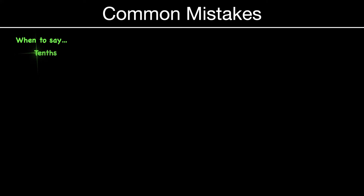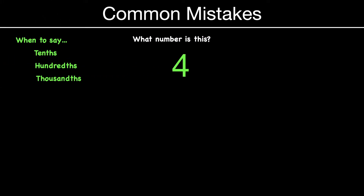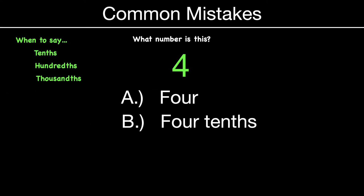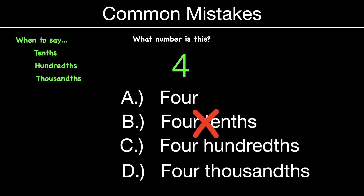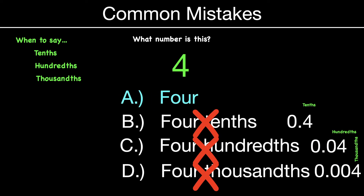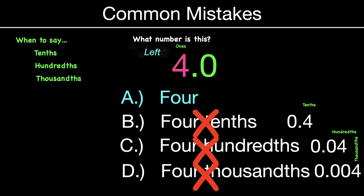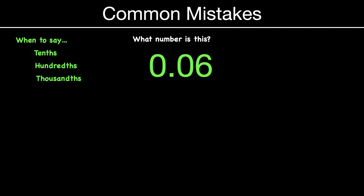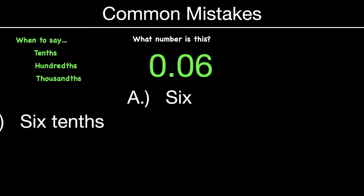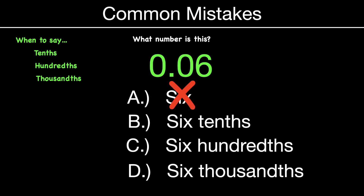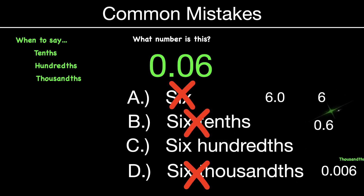Another common mistake is knowing when to say tenths, hundredths, or thousandths. For example, what number is this? Is it four, four tenths, four hundredths, or four thousandths? It's not four tenths — that would look different in the tenths place. Not thousandths either. That would just be four — a whole number in the ones place value. Remember you could write it as 4.0 with your four on the left side of the decimal point. Another example: 0.06 — is that six, six tenths, six hundredths, or six thousandths? Not six — that's a whole number. Not six thousandths — the six would have to be further right. Not six tenths either. So that's six hundredths, because the six is in the hundredths place value.